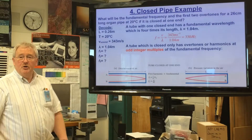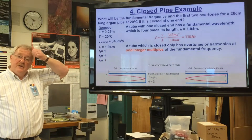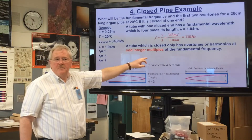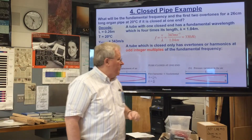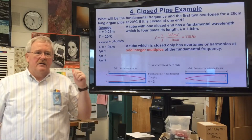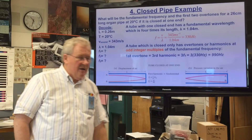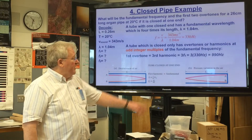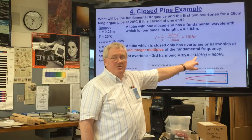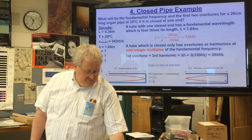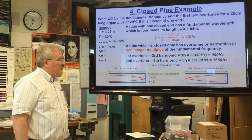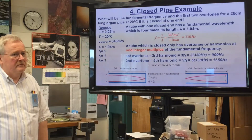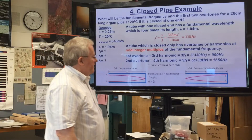A tube closed at one end only has overtones at odd integer multiples of the fundamental frequency — there will be no second harmonic. The third harmonic (first overtone) is 3 × 330 = 990 Hz, and the fifth harmonic (second overtone) is 5 × 330 = 1650 Hz.